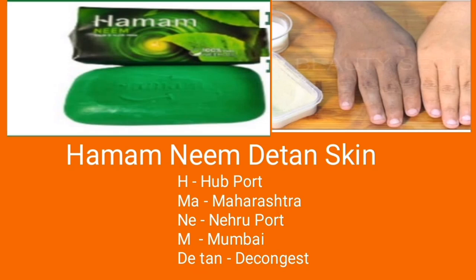From 'Hamam Neen D Tan Skin': H stands for Hub Port, MA stands for Maharashtra. NEE stands for Nhava Sheva / Nehru Port. M stands for Mumbai. D stands for Decongest, Tan and Skin complete the sentence. So Jawaharlal Nehru Port is a hub port in Maharashtra, and this port was built to decongest Mumbai port. From this one sentence you can recall all the points.